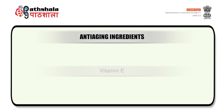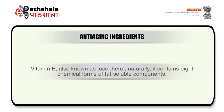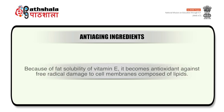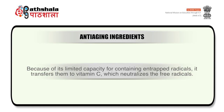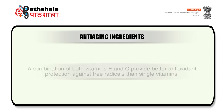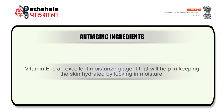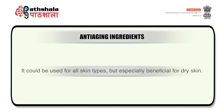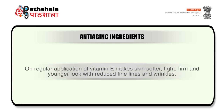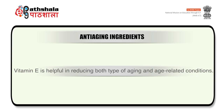The next type of anti-aging ingredient is vitamin E, also known as tocopherol. Naturally it contains 8 chemical forms of fat-soluble components. Because of fat solubility of vitamin E, it acts as an antioxidant against free radical damage to cell membranes composed of lipids. It anchors itself in the membrane and traps free radicals entering into the cell, then transfers them to vitamin C, which neutralizes the free radicals, restoring vitamin E to full scavenging potential. A combination of vitamin E and C provides better antioxidant protection against free radicals than a single vitamin. Vitamin E is an excellent moisturizing agent that helps keep skin hydrated by locking in moisture, increases skin elasticity, and is beneficial for dry skin. Regular application makes skin softer, tight, firm, and gives a younger look with reduced fine lines and wrinkles. Concentration of vitamin E declines upon aging, like other antioxidant defenses.